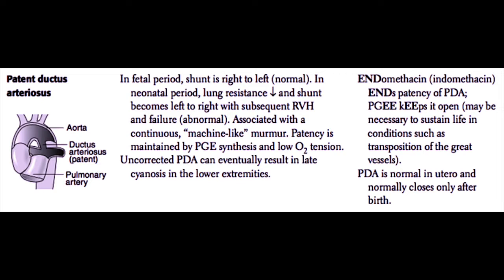In most patients, however, the patent ductus arteriosus can be closed. Remember that uncorrected PDA can eventually result in late cyanosis because of Eisenmenger's syndrome. For treatment: indomethacin ends the patency of the PDA — that's one good way to remember it — and prostaglandin E keeps it open. You give prostaglandin in situations where it is important to keep the PDA open, such as transposition of the great vessels. A PDA is normal in utero and normally closes only after birth, usually within one to two days.